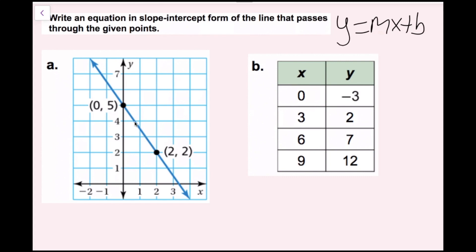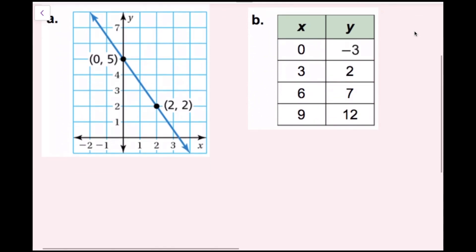First I'm going to find the y-intercept. Remember, the y-intercept is the value of y when x equals zero. Another way to think of it is the y-intercept is the point on the line where the line crosses the y-axis. I can see that this point on this line is the y-intercept, and the y-value there is five. So b, which is the y-intercept value, is equal to five. b equals five.